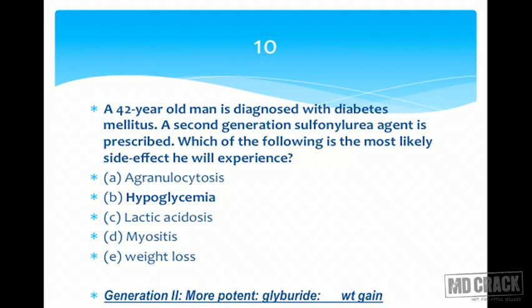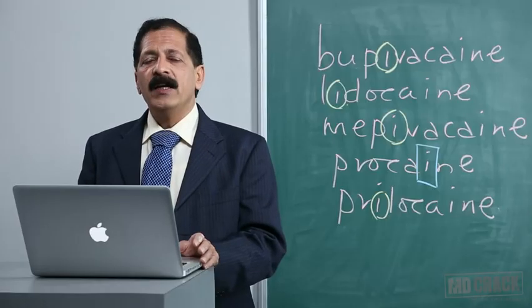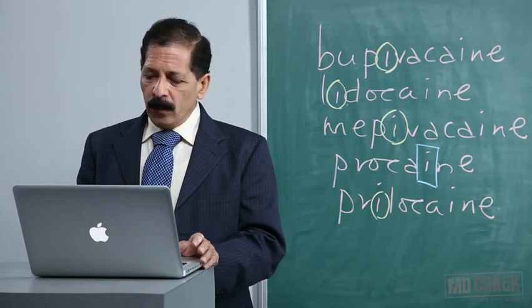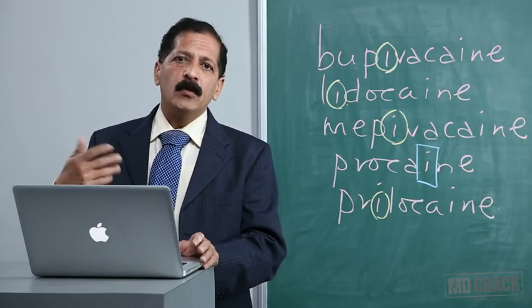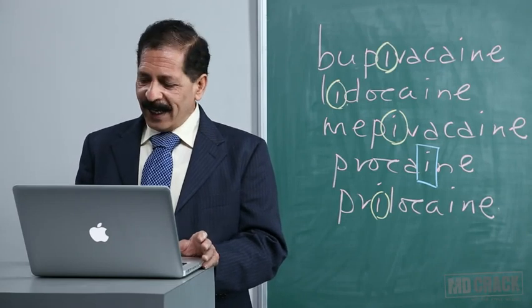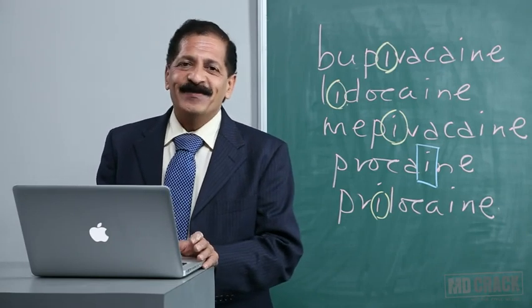Note that sulfonylureas cause weight gain, not weight loss — so weight loss as an option is incorrect. In obese diabetic patients, biguanides are preferred because they cause anorexia and weight loss. This session covered 10 pharmacology questions across multiple chapters. Review and reinforcement of these key concepts will help consolidate important pharmacology knowledge.